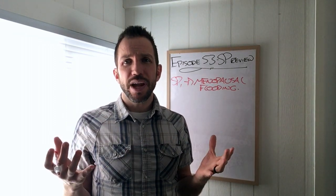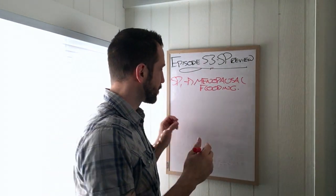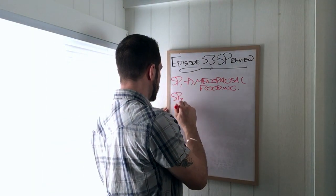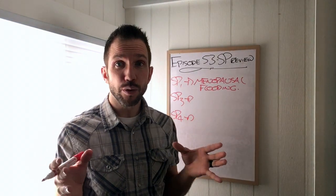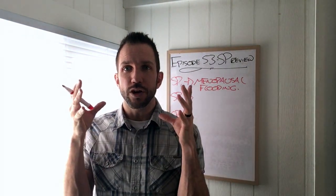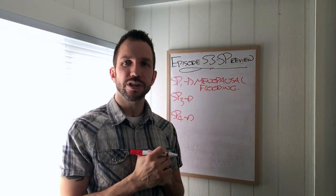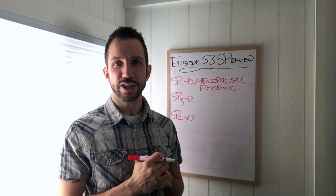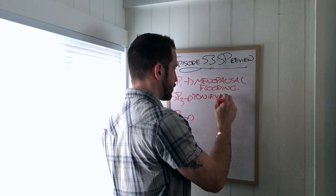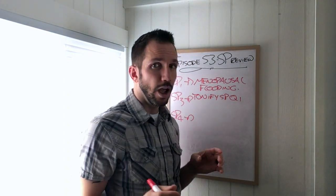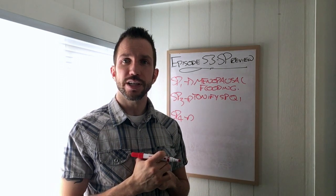Spleen two, unless somebody's got pain there, I'm not really using it. Spleen three and four, definitely using them. Spleen three is the earth point on the earth channel. So what it does is it tonifies spleen chi, and it's a great option if you can't use spleen six because your patient is pregnant.